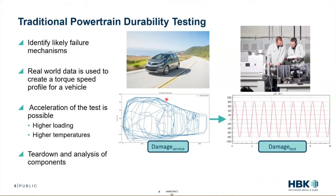Traditional powertrain durability testing involves identifying the likely failure mechanisms. For example, we take a car out on the road, identify its torque and speed profile — and this is some actual road data for torque and speed from a Chevy Bolt. We take that real-world data and use it to create a torque and speed profile for a vehicle, then we want to accelerate those tests in the lab.